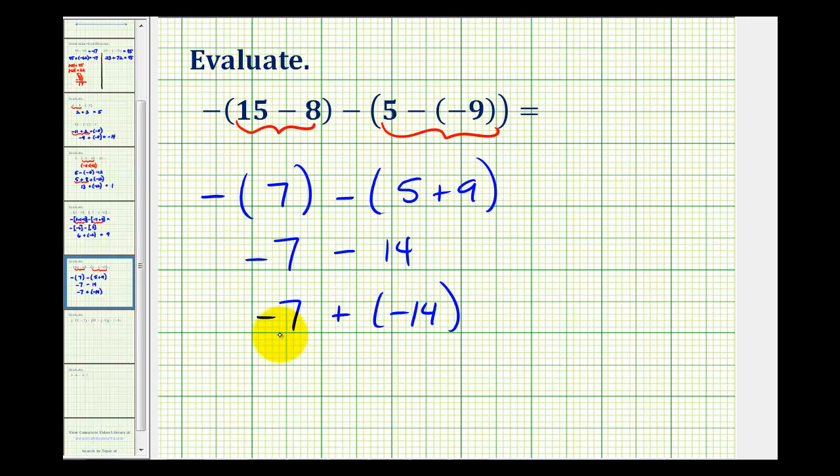So now for the last step, we're adding integers with the same sign. So we'll add their absolute values and keep the sign. So the sum is negative 21.